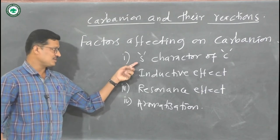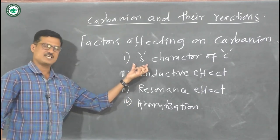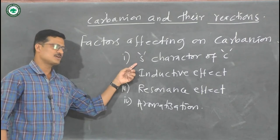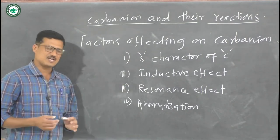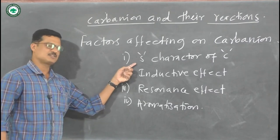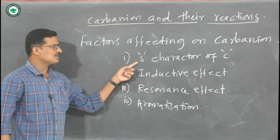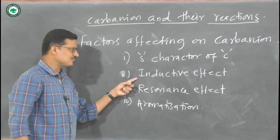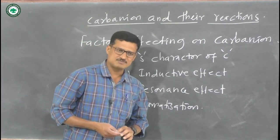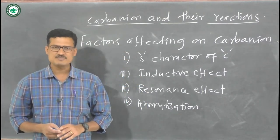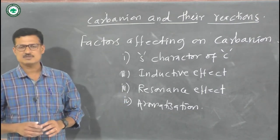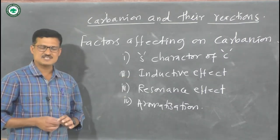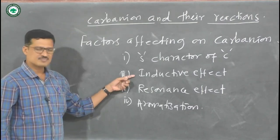The first factor — s-character of carbon: as already discussed, when the s-character of carbon increases, going from alkane to alkene to alkyne, the carbanion stability increases. The second factor — the inductive effect: there are two types, the +I (electron-donating inductive effect) and the -I (electron-withdrawing inductive effect). Groups that give the -I effect stabilize the carbanion.